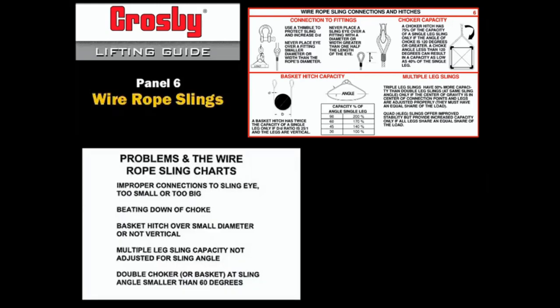Problems and the wire rope sling charts: Improper connections to the sling eye, either too small or too big. Beating down of the choke to an angle of less than 120 degrees.